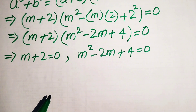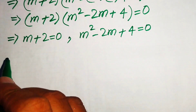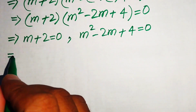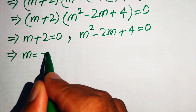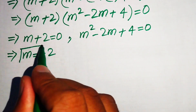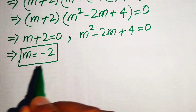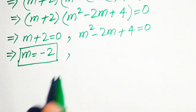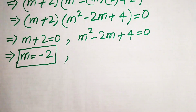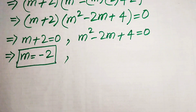In the first case, we get the value of m equals minus 2. This is the first real solution of the given equation. In the next step, we need to solve the second quadratic equation, which we do using the quadratic formula.